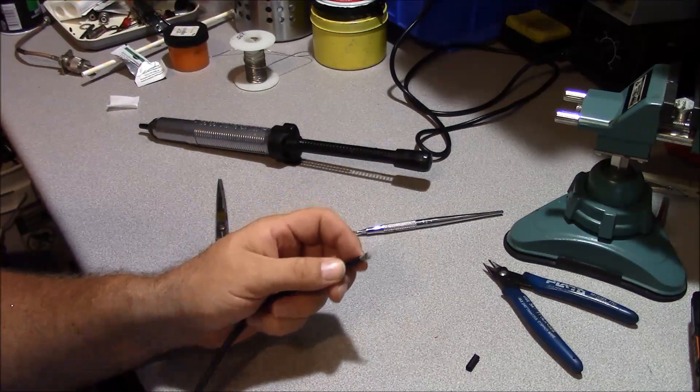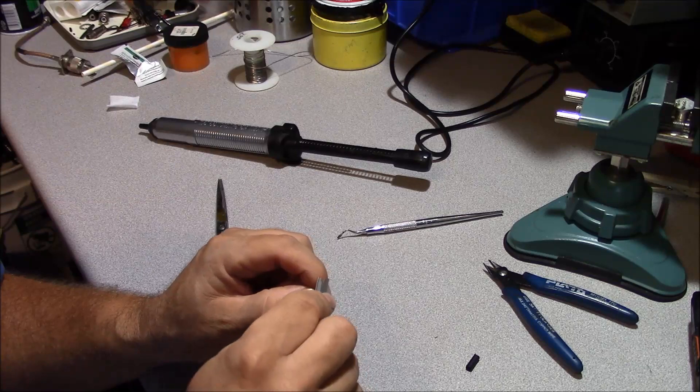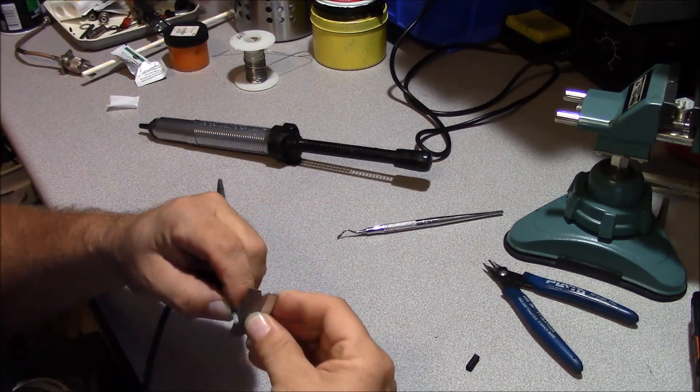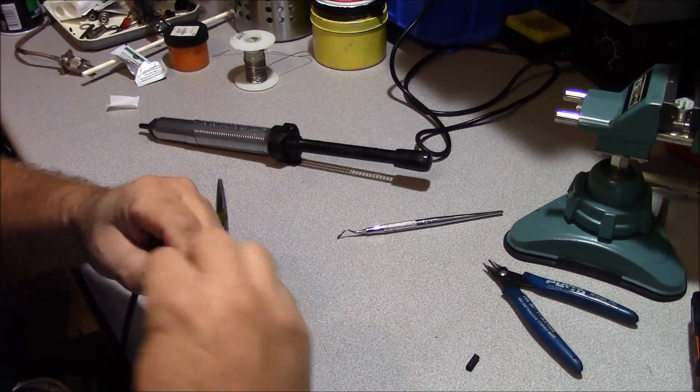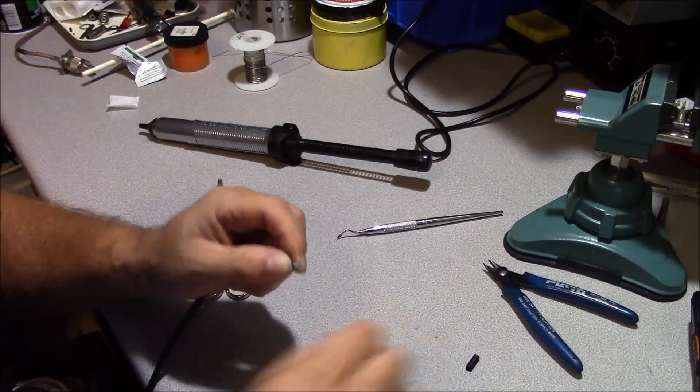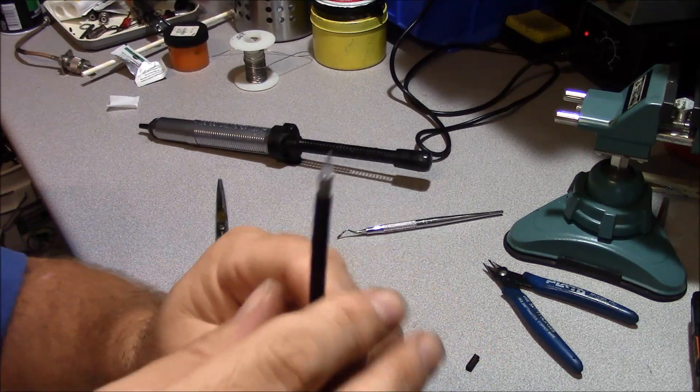Now we'll take our razor blade and a couple of millimeters ahead of where our shield is, we'll remove our center conductor insulation. And you can see how we're prepped here.